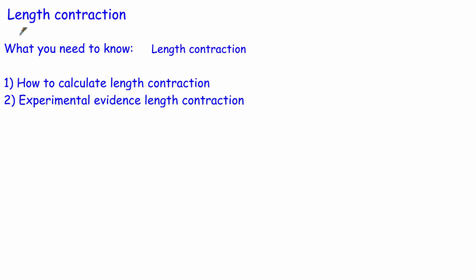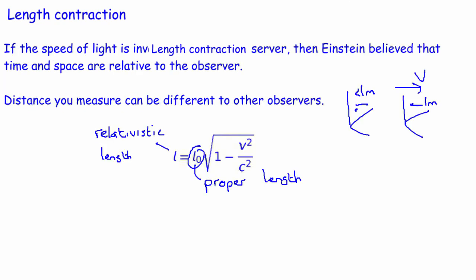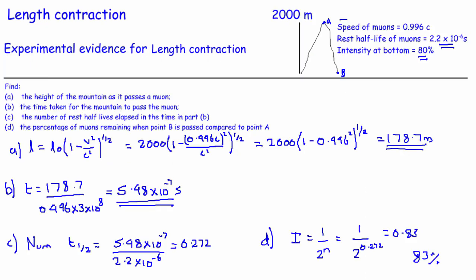So that's length contraction. We simply needed to know how to calculate it and the experimental evidence for it. The way we calculate it is by using this equation, and the tricky bit is making sure we've got the proper length, just like in the last video we needed the proper time. For the experimental evidence, you need to be able to reproduce this muon calculation. That was length contraction as part of the AQA option for turning points. Thank you very much for watching, and I'll see you again soon.